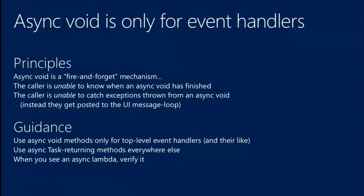There's an implementation in the slides for how to call dispatcher.run-async correctly — a helper method you can define yourself that takes a funk-of-task and does the transform so exceptions behave as expected. The key takeaway: async void is for fire-and-forget, top-level things only. Don't use it for helper methods. And for async lambdas, use async task lambdas unless you're subscribing to an event handler like a click event.